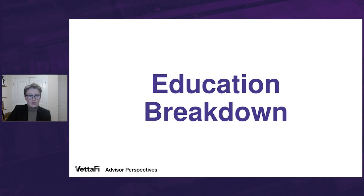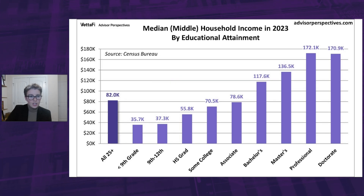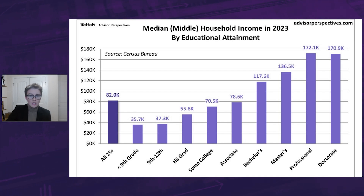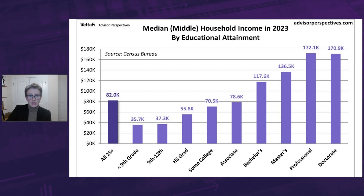Lastly, I'd like to close out our video by examining median household incomes based on educational attainment. What is the relationship between education and household income? As expected, higher levels of educational attainment are associated with higher household income, and with this chart we can see just how much each level of education adds to income. Notably, a bachelor's degree median is more than double that of a high school grad. Additionally, a master's degree adds nearly $20,000 to the bachelor's median, while a professional degree adds almost $55,000.